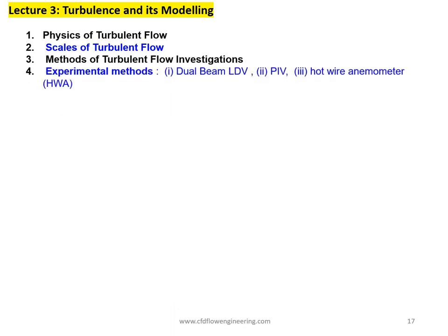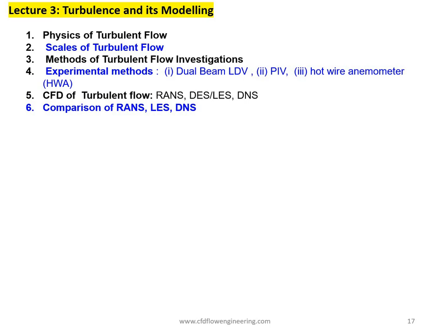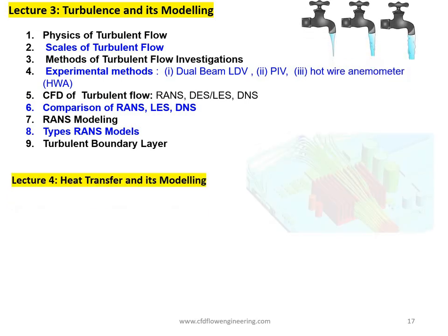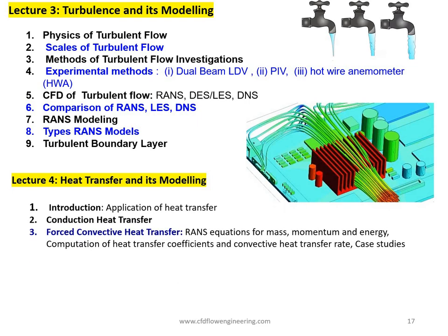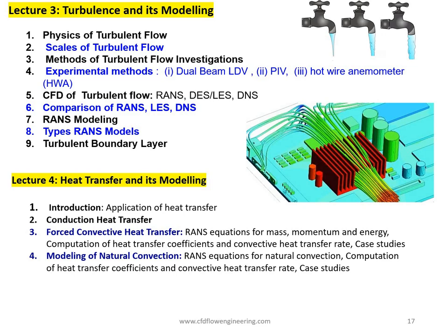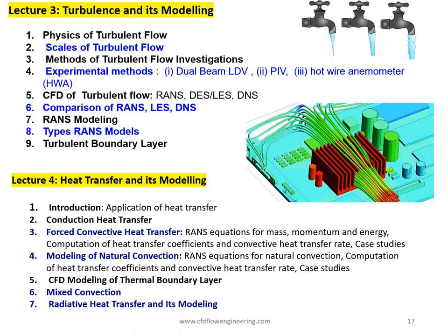The third lecture covers turbulence modeling: physics of turbulent flow, scales, experimental methods, and methods for turbulence modeling including RANS, detached eddy simulation, and DNS, with comparison between these three methods. Different types of RANS models are discussed in detail, along with turbulent boundary layer resolution. The fourth lecture is based on heat transfer and its modeling, including conduction, the RANS equations for mass, momentum, and energy, computation of heat transfer coefficients, and modeling of natural convection including buoyancy modeling. It also covers the thermal boundary layer for internal and external flows and radiative transfer models.